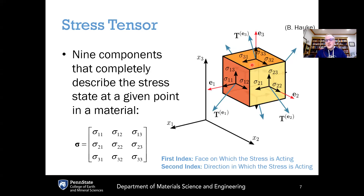On the top here, these are sigmas that all start with the index 3 — these are all stresses acting on the third face along the one, two, and three directions. On the left, these sigmas all have one as the first index because they're all acting on the first face, along either the first, second, or third directions. The sigmas in the front are all acting on the second face along the first, second, or third directions. The complete stress state is given by the combination of all nine of these components of the stress tensor.